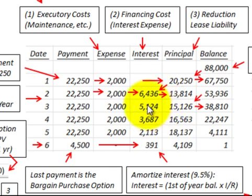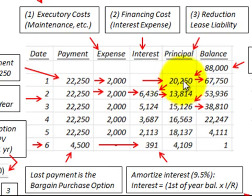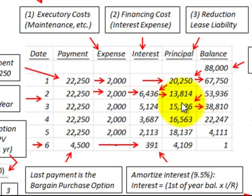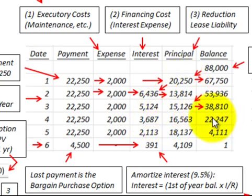Subtracting the interest expense of $5,124 from the minimum lease payment of $20,250 gives the principal amount for the year of $15,126. This interest plus principal must always equal the minimum lease payment of $20,250. You continue amortizing interest and principal in this fashion down to a zero balance.